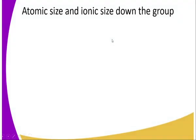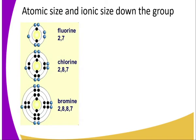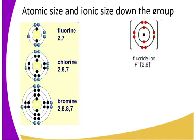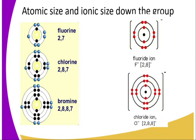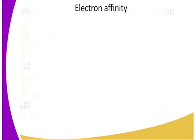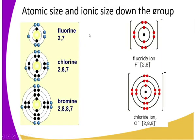Down the group — fluorine, chlorine, bromine, and iodine — fluorine forms a fluoride ion and chlorine forms a chloride ion. Down the group, the atomic size and ionic size both increase. This is due to an increase in the number of occupied energy levels.